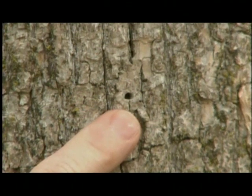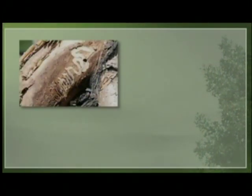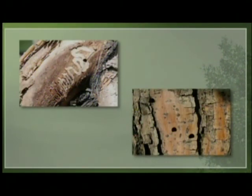The other EAB sign is the exit hole. In the early summer, the adult beetle chews its way out of the tree, leaving behind a small hole. The hole is about one-eighth of an inch wide and is shaped just like the capital letter D. This D-shaped exit hole can be in any direction. If these two signs are both seen on an ash tree, it's likely that emerald ash borer is present, and it wouldn't take long before a larva or adult beetle was found in or on the tree.